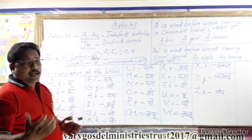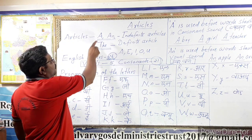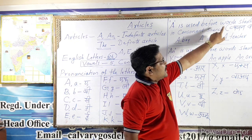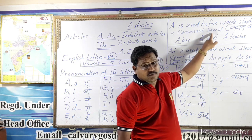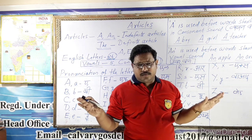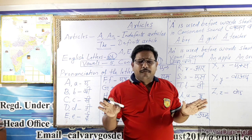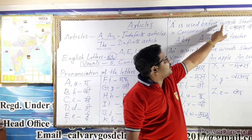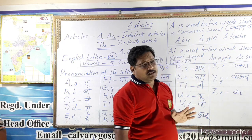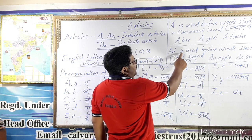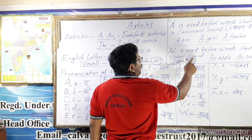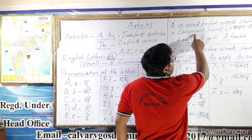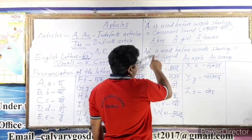Now, what I am going to tell you is the use of A and An. A is used before words starting with a consonant sound, and An is used before words starting with a vowel sound. Remember: consonant means 'Vyanjan' and vowel means 'Swar.'